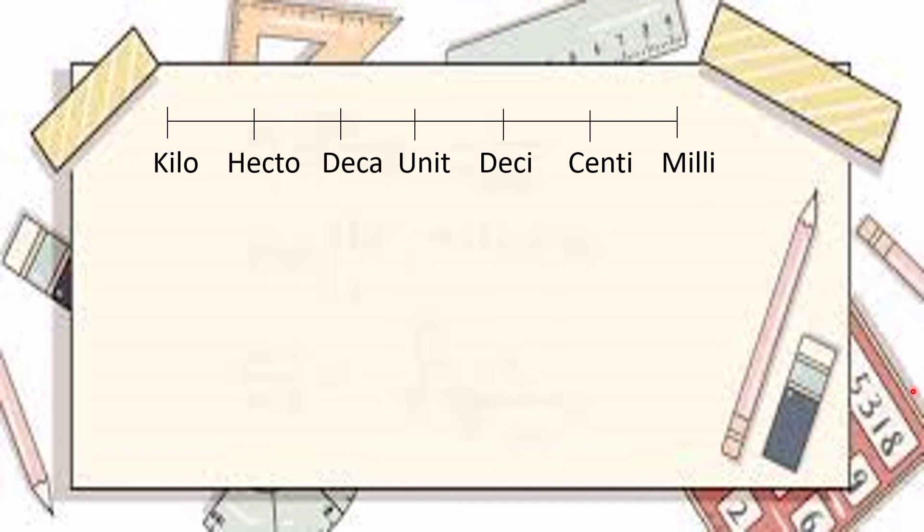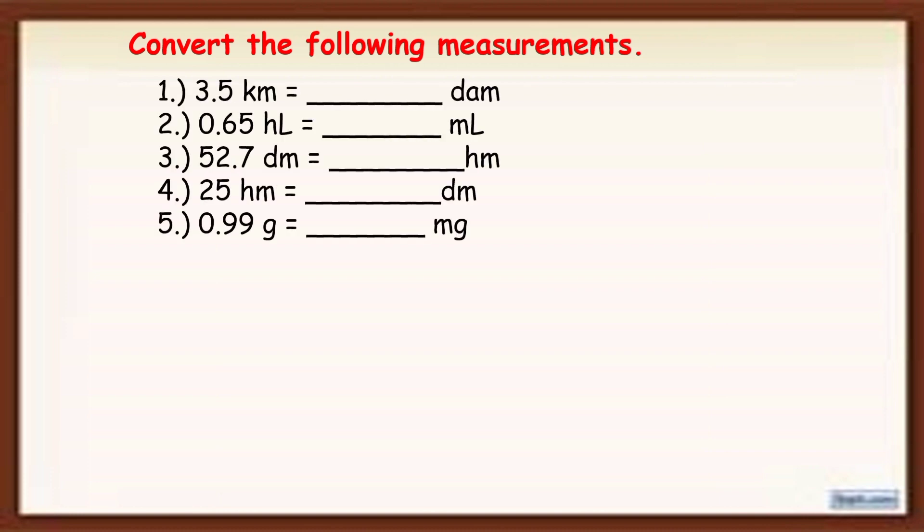So para mas madaling matandaan kung paano yung pagkakasunod-sunod nila, pakitandaan lang yung King Henry doesn't usually drink chocolate milk. So dito sa unit, pwede tayong gumamit ng, nagbabago-bago to ha, it's either gram, meter, or liter. Okay, now to understand it further, let's have an example. Convert the following measurement. So these are the given.